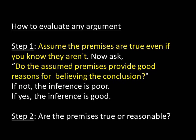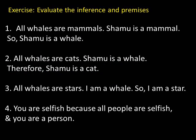On this screen you get some practice. The first argument has good premises but a faulty inference — you cannot infer that Shamu is a whale from the facts that Shamu is a mammal and all whales are mammals. Saying all whales are mammals is not equivalent to saying all mammals are whales; there may be many mammals that are not whales, and Shamu could be one of those non-whale mammals.